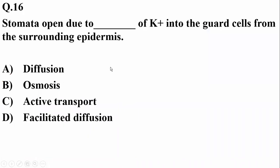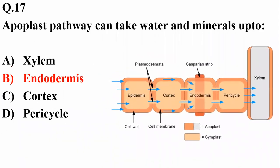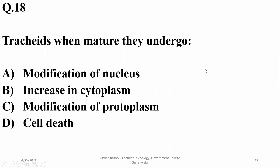Question sixteen: stomata open due to active transport of potassium into the guard cells from the surrounding epidermis, so Charlie is correct. In the apoplast pathway, water and minerals can travel up to the endodermis only, because at the endodermis it becomes discontinuous due to the presence of specialized Casparian strips, forcing a change of pathway.